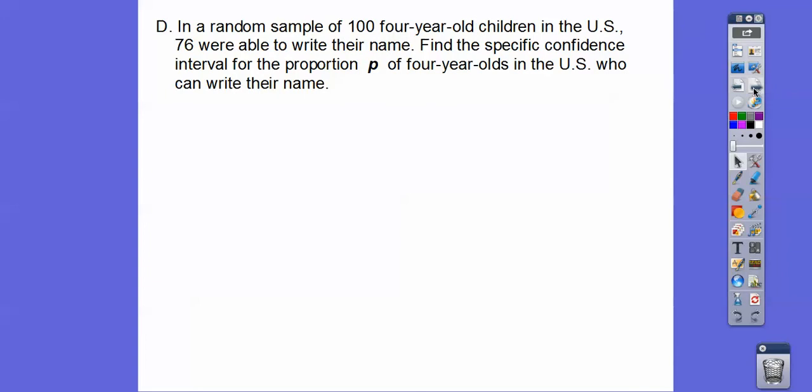In a random sample of 100 four-year-old children in the United States, 76 were able to write their name. So this is P-hat, 76 out of 100, which is 0.76. Find the specific confidence interval for the proportion P, which is our population proportion, of four-year-olds in the U.S. who can write their name. They want us to find a 95% confidence interval.